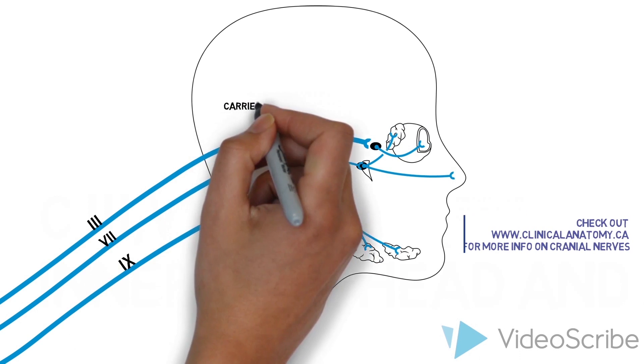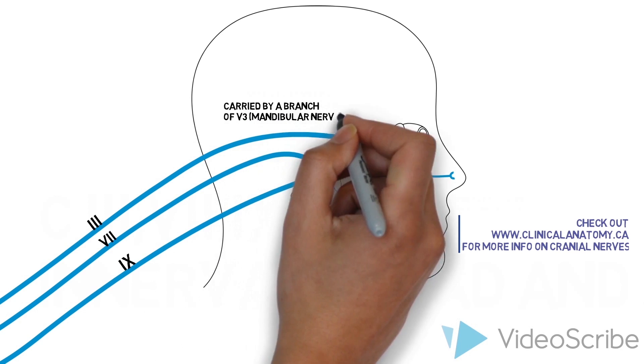Fibers in 9 are carried by a branch of V3 to the parotid gland.